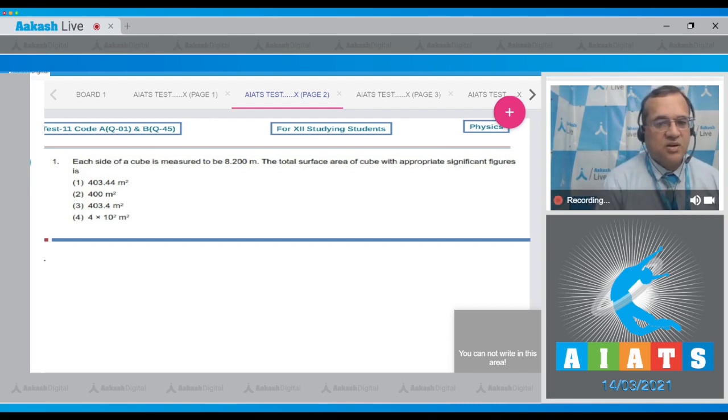Now you know that the surface area will be equal to 6 times the side squared. The surface area equals 6 times L, which is 8.200 squared, and if you solve this it becomes 403.44 meter square.